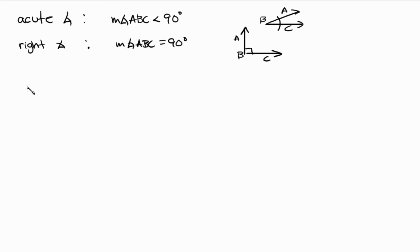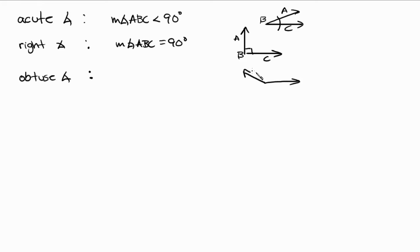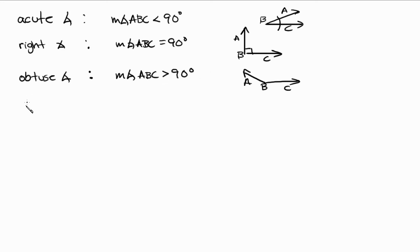If we open up the angle some more, we'll end up with something called an obtuse angle. The measure of angle ABC is greater than 90 degrees. That's an obtuse angle.